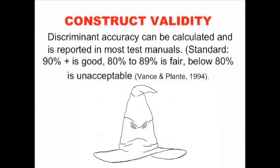Imagine you're giving the test to 200 children — 100 who we know have a disability and 100 who are typically developing. We give the test to the 100 kids with disabilities and it accurately identifies 80 of them, while 20 are not identified as having a disability. That's fair — it meets our standard of 80 percent accuracy.